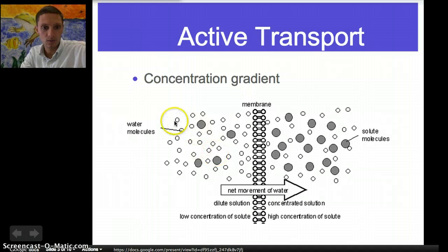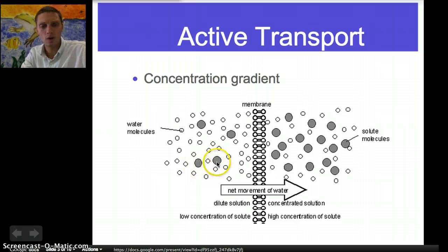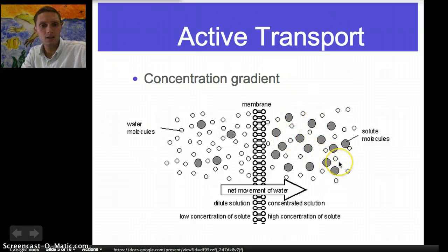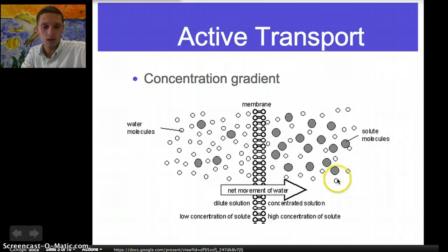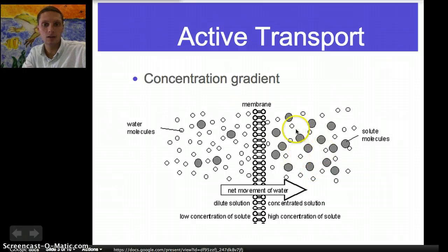In our example, we've got some water molecules — little dots — and we have some solute. This could be salt, it could be sugar; it's anything that the water is dissolving. On the other side of the membrane, we've got lots of solute molecules as well as quite a few water molecules. On this side, we have a high concentration of water molecules relative to solute molecules. On the opposite side, we've got a lot of solute molecules, and although we have a lot of water molecules, the concentration is less — there are fewer water molecules relative to solute.